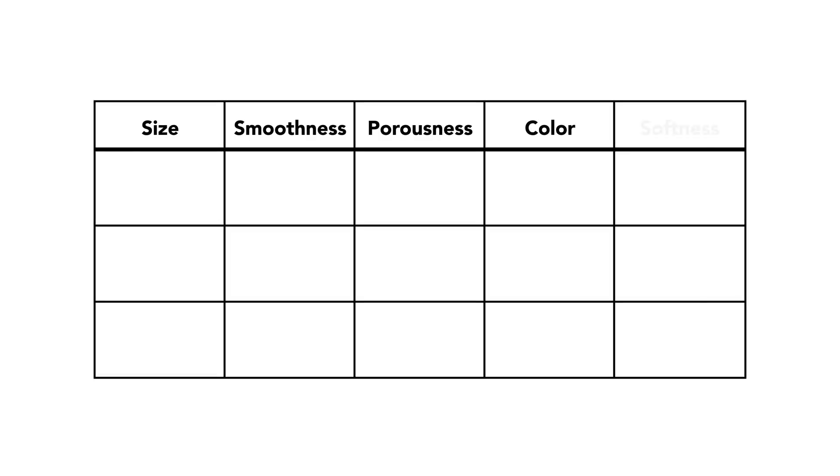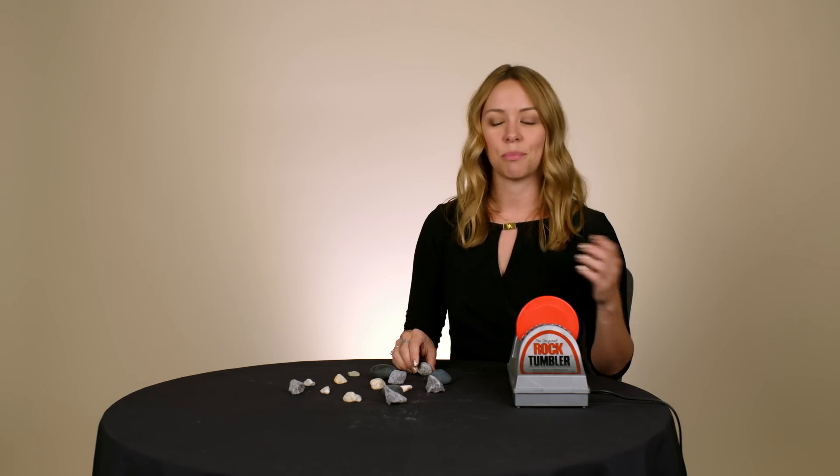One easy way to do this is to make a grid. Then take the attributes you're interested in and label each rock under each attribute. So for example,